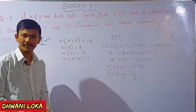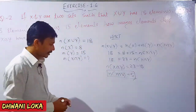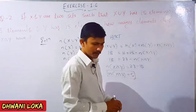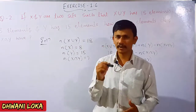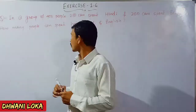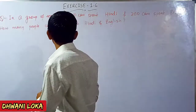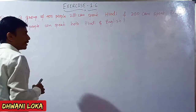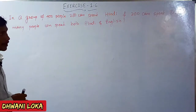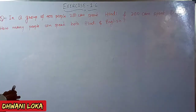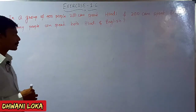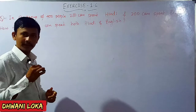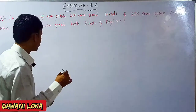The answer is 5. Question number 3: In a group of 400 people, 250 can speak Hindi and 200 can speak English. How many people can speak both Hindi and English?